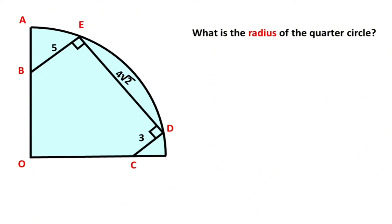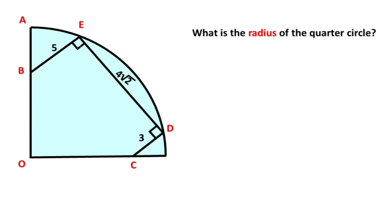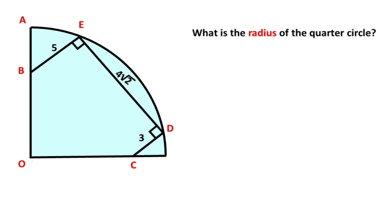Hello everyone. In this video we have one quadrilateral, circle with center point O. This length is given as 5, here is given 3, this length is given 4√2, and these angles are given as 90 degrees. The question is: what is the radius of the circle?